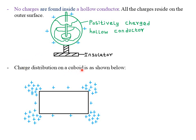For charge distribution on a cuboid, charges will always be more concentrated at sharp points. At the vertices of the cuboid, we have more charges compared to the flat areas. The charge density is always very high at sharp points, so at all vertices of the cuboid, the charge distribution is very high.